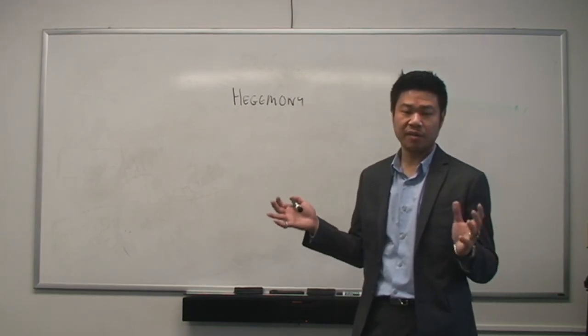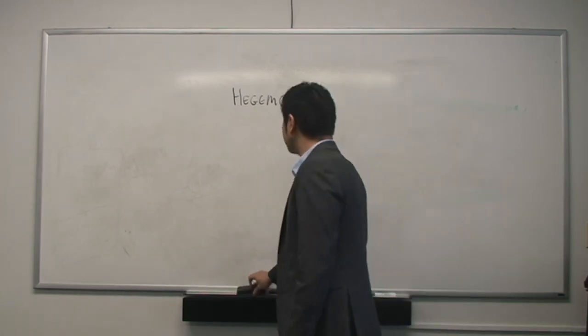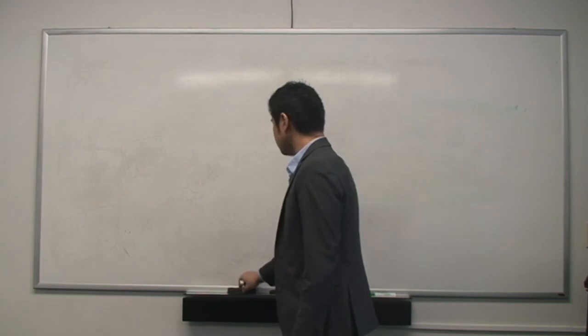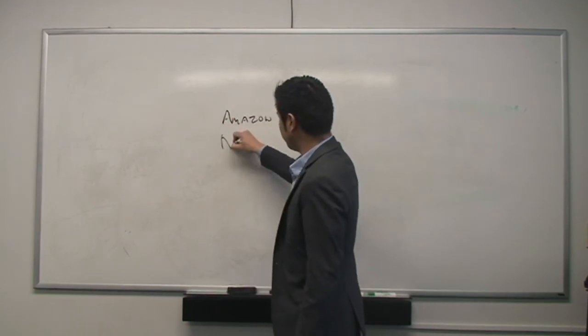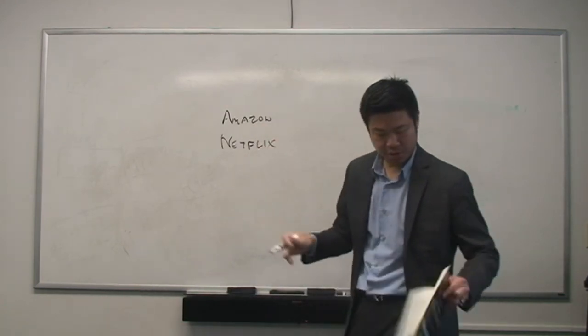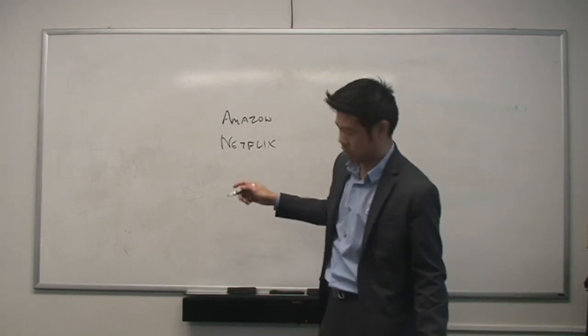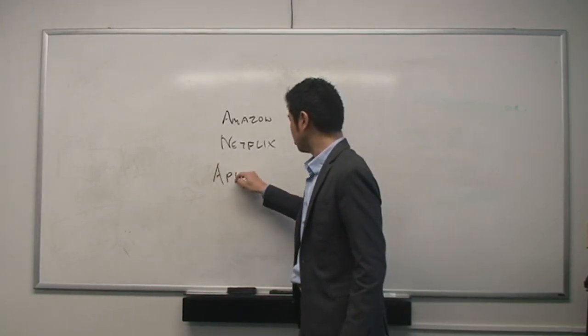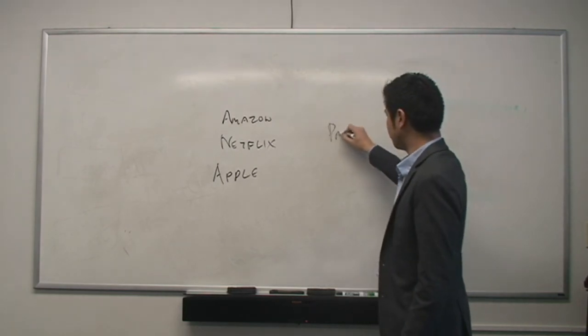Power in the hands of a small number of dominant players. So the ones that they set up is Amazon, Netflix, what was the last one? Apple. iTunes. So let's say Apple.